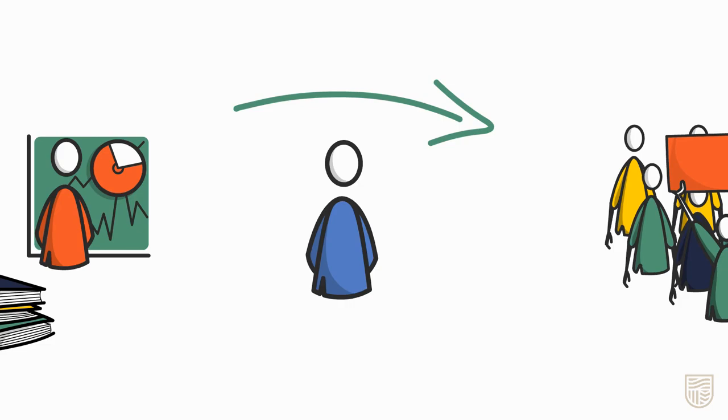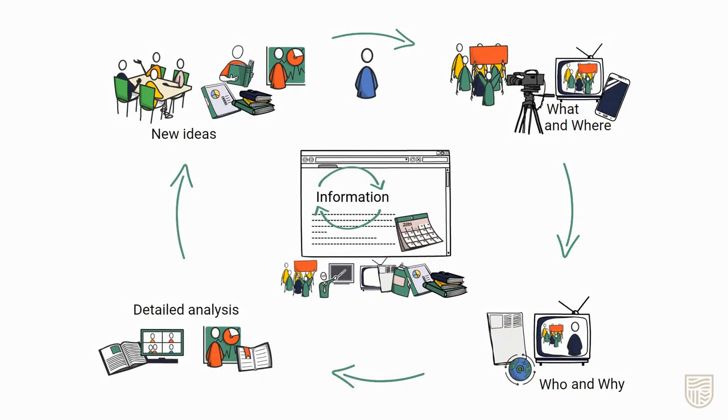If you are struggling to locate scholarly resources for your topic, think about where it is in the information cycle. If it's a current event, you may only be able to find newspaper articles or social media posts rather than scholarly sources.